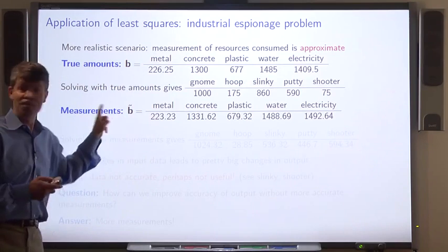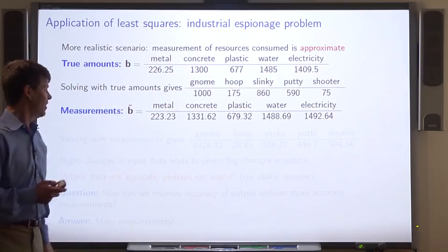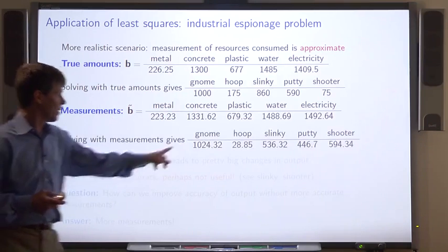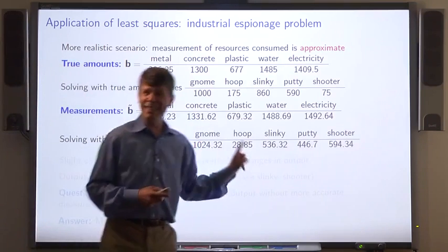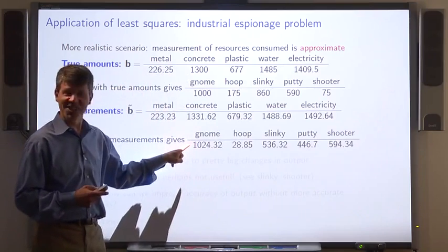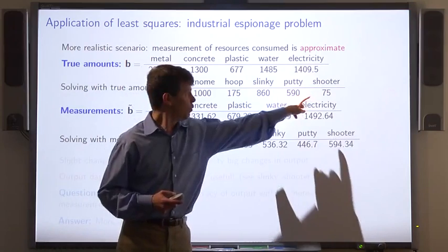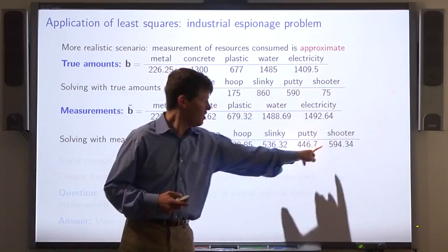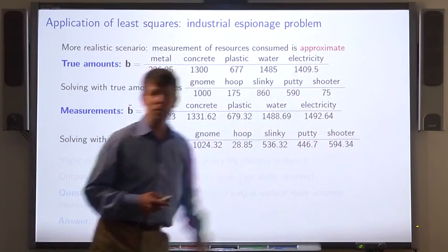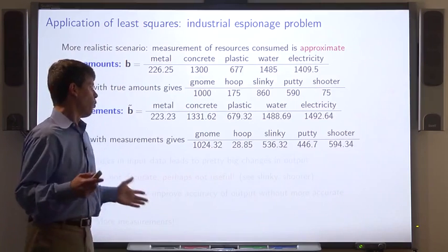Now, solving with b tilde instead of b gives us this, which is a really bad answer, right? For example, here, the number of shooters that were manufactured was 75, but our solver came up with 594.34.